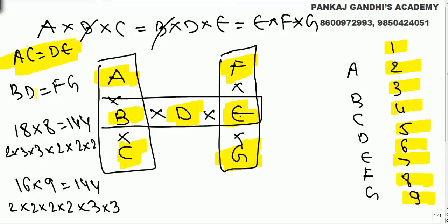Based on this, we can say a·c = d·e (b gets cancelled) and b·d = f·g (e gets cancelled). Looking at a·b·c, b·d·e, and e·f·g, there are only two variables — b and e — that appear in two products. No variable appears in all three products.